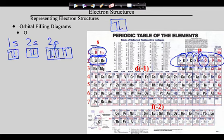To check ourselves, we notice oxygen has two empty spaces in its diagram. Looking at the 2p on the periodic table, oxygen is two boxes short of the end of the 2p, meaning those two empty spaces represent the two boxes we're short of the end — confirming we did this correctly.